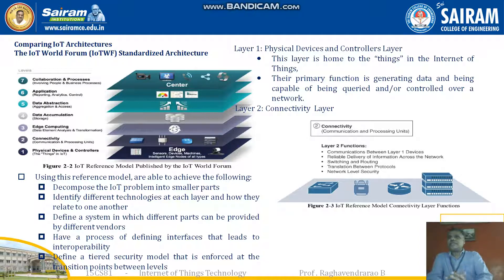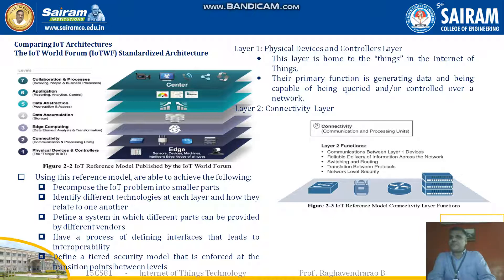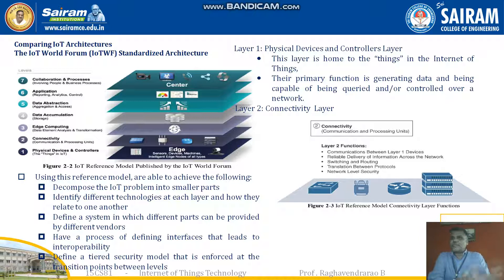The first layer is the physical layer — the home of the things in the Internet of Things. Everything at this layer includes sensors and related devices. Its primary function is data collection and control over the network. The second layer is the connectivity layer, where data collected is communicated between different processing units, handling communications, reliable delivery, switching, routing, protocol translation, and network-level security.